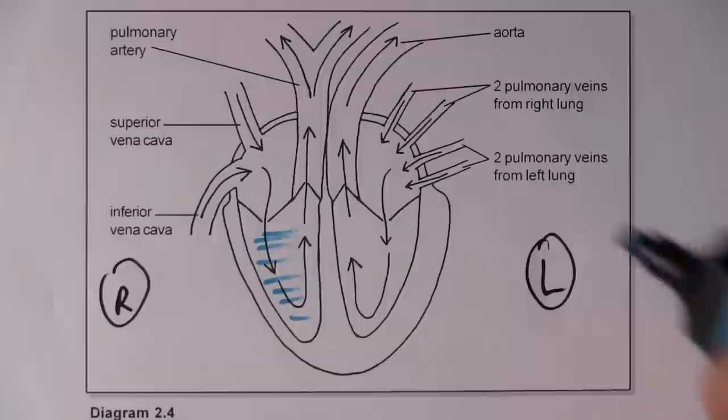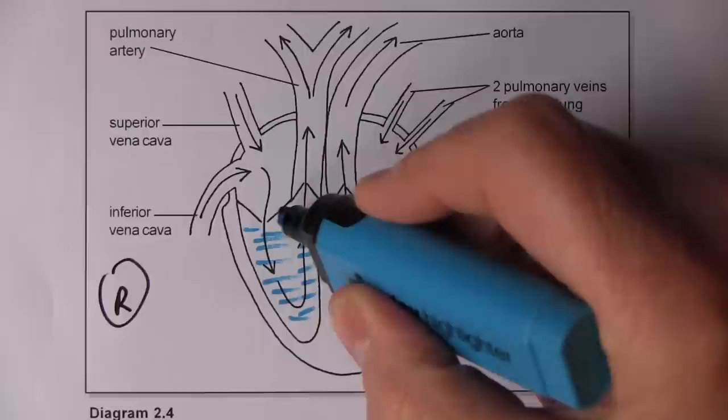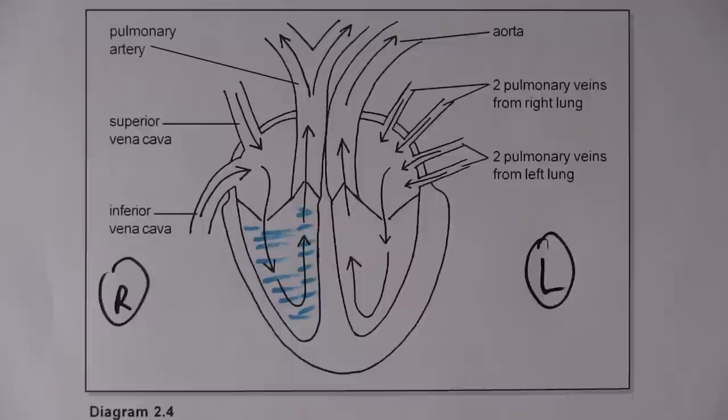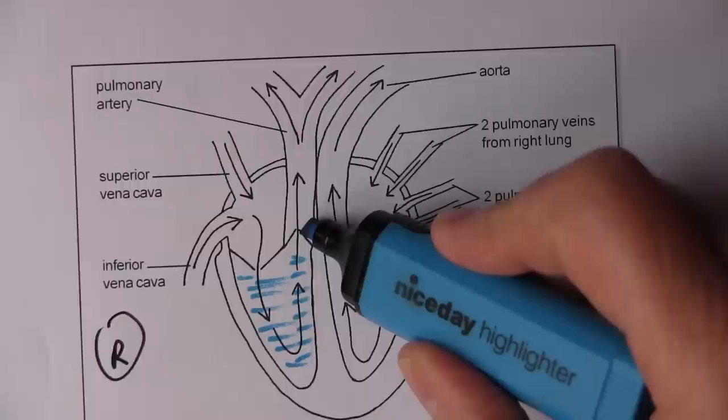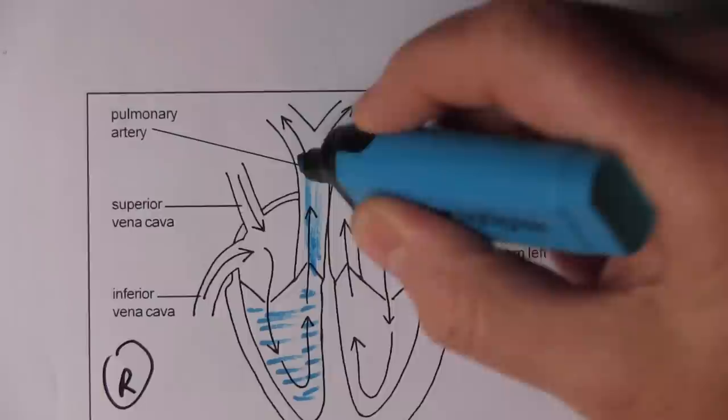What we did last time is we started off in the right ventricle with relatively deoxygenated blood — the oxygen saturation is probably going to be about 75%. It's not fully deoxygenated, it's partly deoxygenated in health, but it still needs to go to the lungs to get more oxygen. So the right ventricle is going to contract and send blood up through the pulmonary valve.